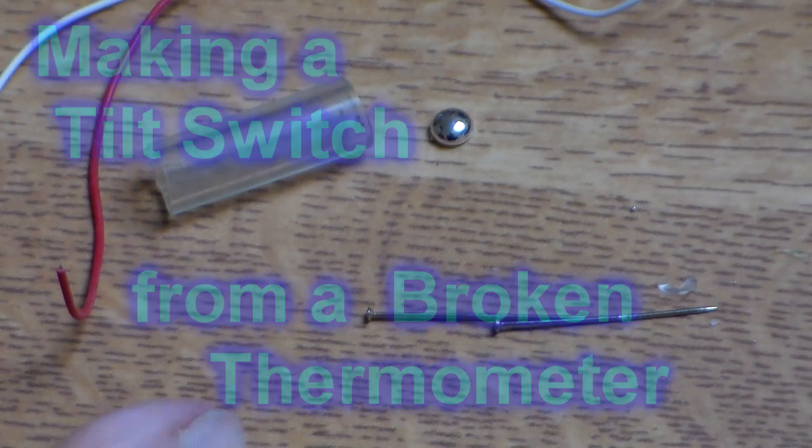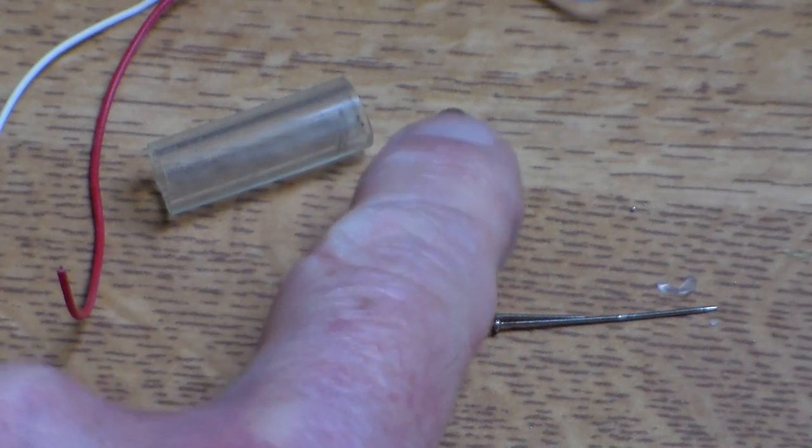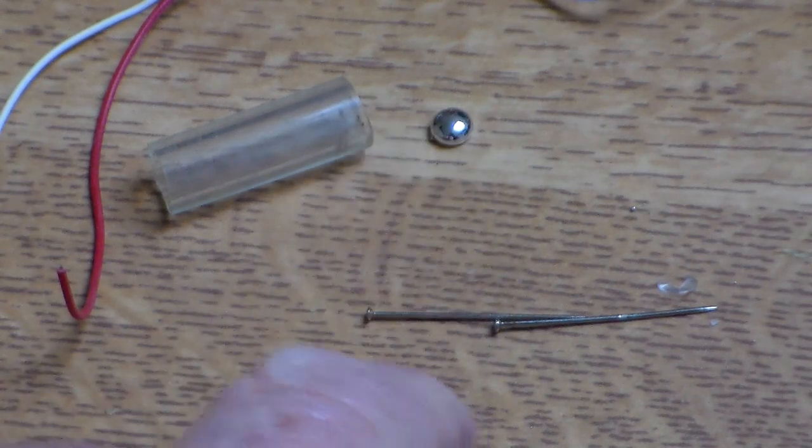Right, making a mercury tilt switch from a little bit of mercury from a broken thermometer. What do you need?